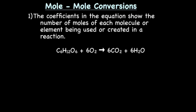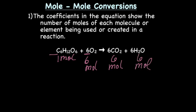The first thing we need to talk about is coefficients in a balanced equation. Coefficients show the number of moles of each molecule or element being used or created in a reaction. For the reaction C6H12O6 + 6O2 → 6CO2 + 6H2O, we have 1 mole of C6H12O6, 6 moles of O2, 6 moles of CO2, and 6 moles of H2O. The coefficients show the number of moles of each molecule or atom used in the reaction.